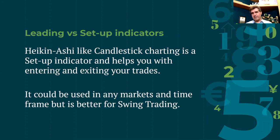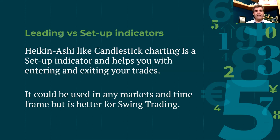The good thing about Heikin-Ashi is you can use it in a variety of markets and a variety of timeframes. But because of the marrying of the two previous bars, it becomes a little slower as far as reaction goes. So if you're doing fast-paced futures market day trading, it is better to use regular candlesticks rather than Heikin-Ashi. The best usage would be on a longer-term bar, such as a daily timeframe — you could also use 240 minutes. For very short-term, because of that lagging, it's not as useful. It is good for swing trading, which is more of intermediate-term investing.